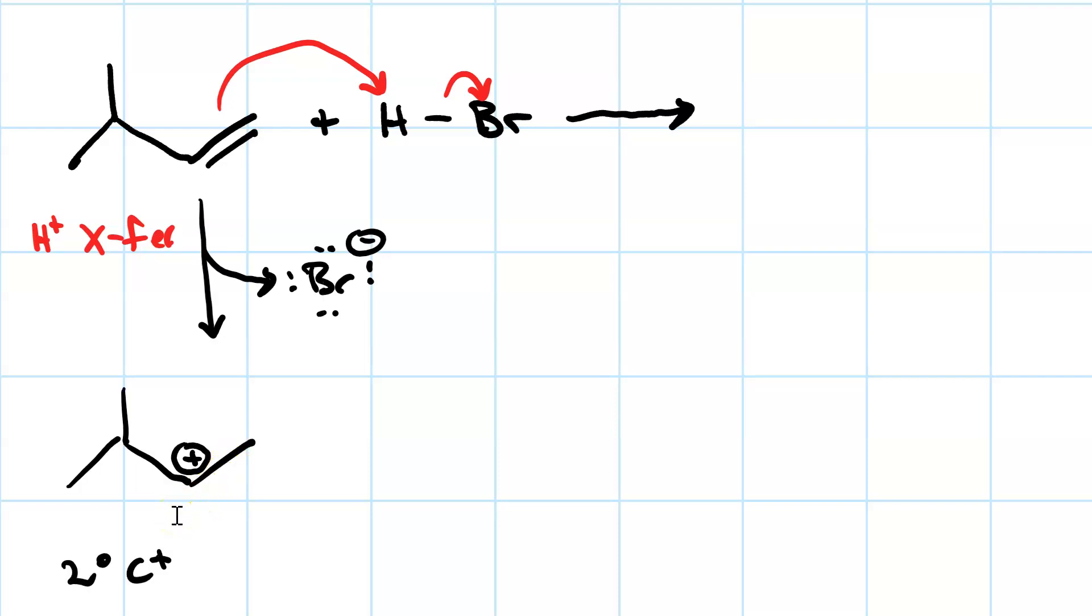So we've got our secondary carbocation here. We can do a 1,2-hydride shift to get a tertiary carbocation.